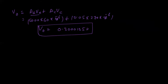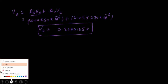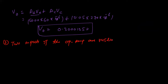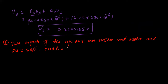Now a similar but slightly different question — example number two. The two inputs of the op-amp are V1 = 745 microvolts and V2 = 740 microvolts, with A_d = 5 × 10^5 and CMRR = 80 decibels. Note that CMRR is given in dB here. Calculate the output voltage and the percent error due to common mode.